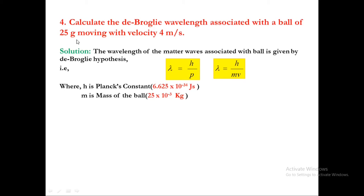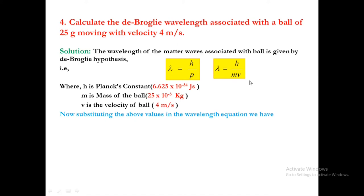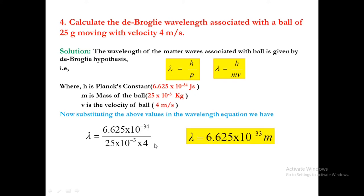Since kg is the SI unit of mass, we convert 25 grams to 25 into 10 power minus 3 kg. V is the velocity of the ball, given as 4 meters per second. Substituting these values: lambda equals 6.625 into 10 power minus 34 divided by 25 into 10 power minus 3 into 4. We get lambda equal to 6.625 into 10 power minus 33 meters.